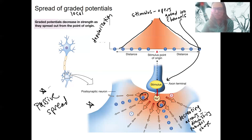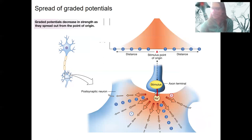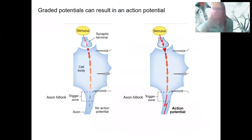What this means is graded potentials can be different sizes — they're graded — and when they're initiated, either at the dendrites or cell body, that's where local potentials or graded potentials occur. They may or may not cause an action potential. So graded potentials may or may not result in an action potential.